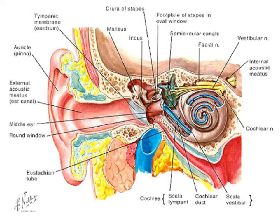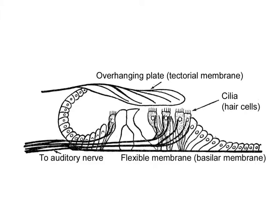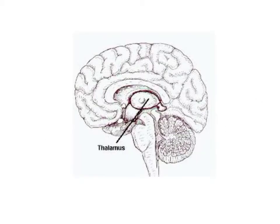The vibrations from the ossicles cause the oval window, or the membrane covering the opening of the cochlea, to vibrate. This vibration disturbs the fluid inside the cochlea and the basilar membrane, causing the hairs and the hair cells to bend. This bending leads to a change in electrical potential within the cell. All of this triggers nerve impulses in the attached neurons, which are sent to the thalamus.